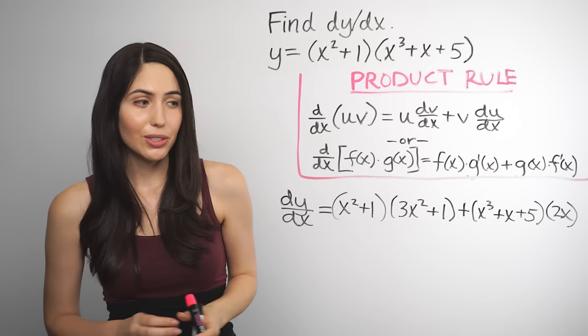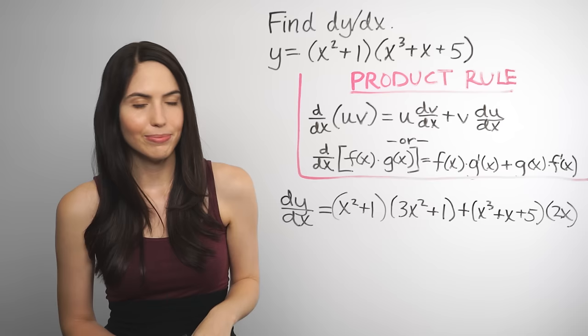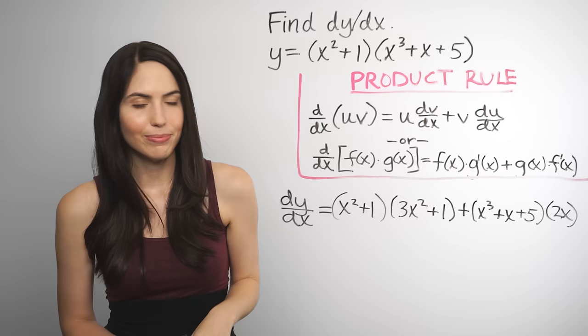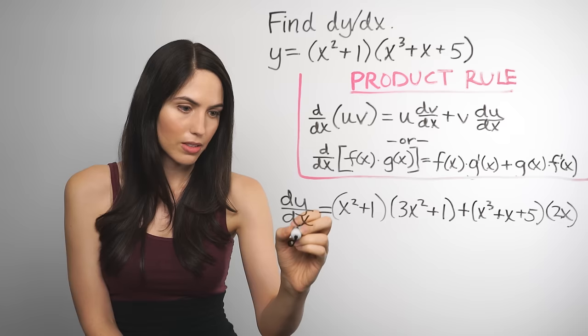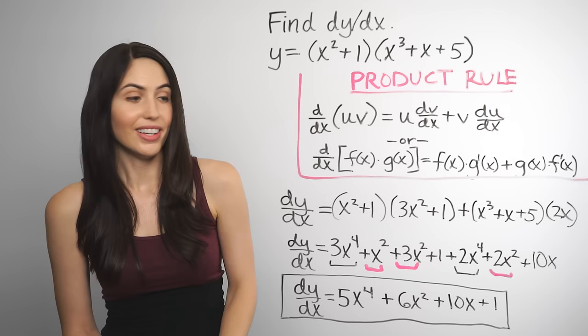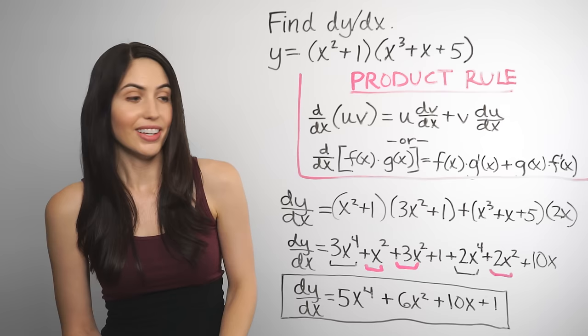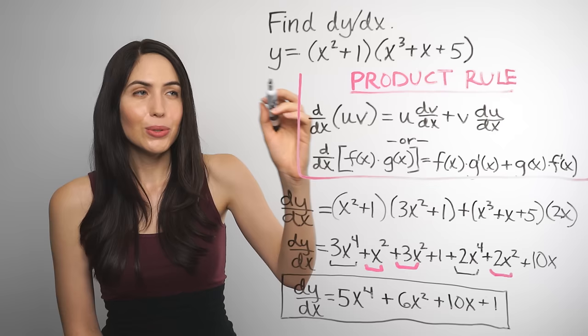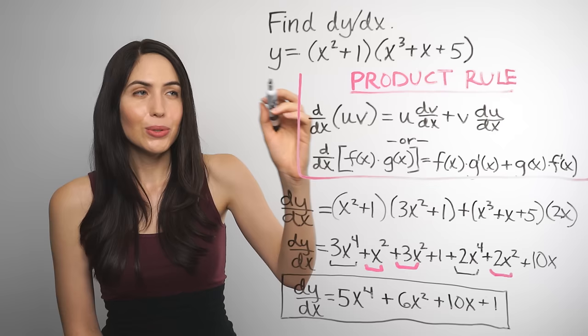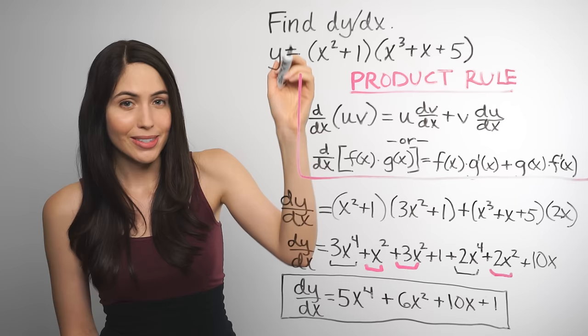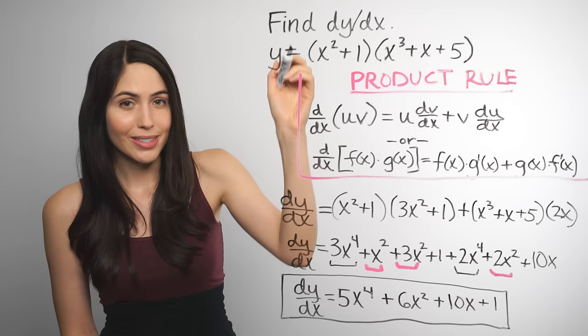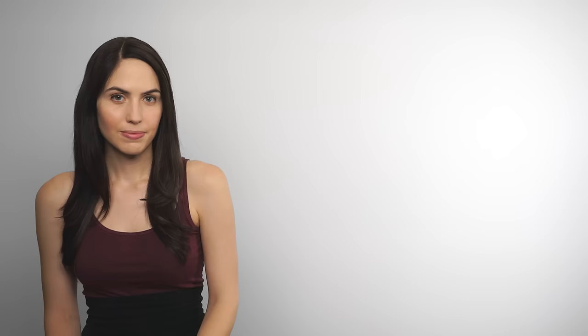If you want to, or if you have to, you can simplify this — multiply it out, combine like terms and simplify. That's the simplified answer for the derivative. And for this particular one, just so you know, you could have done it without the product rule — you could have multiplied this out, distributed, foiled it, and then used the power rule on each separate term. But at some point you're going to want the product rule, and this is how you use it.